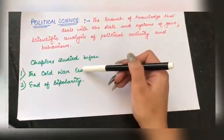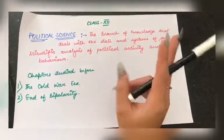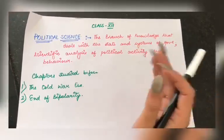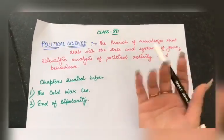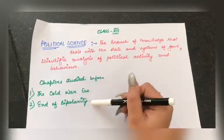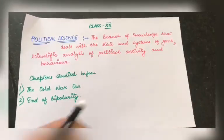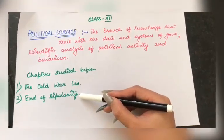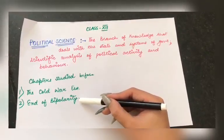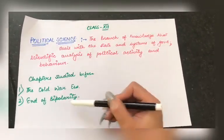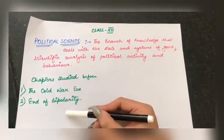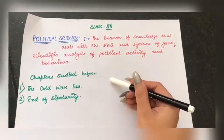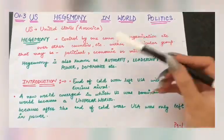The two chapters we covered are the Cold War Era and the End of Bipolarity. In the Cold War Era, we came to know that there are two superpowers in the world — USA and USSR — and they were fighting without nuclear bombs, which was known as the Cold War. Regarding bipolarity, the Soviet Union (USSR) disintegrated, and the bipolar world — meaning two-polar world — ended and resulted in a single unipolar world, which was that of the USA.